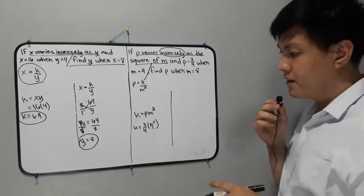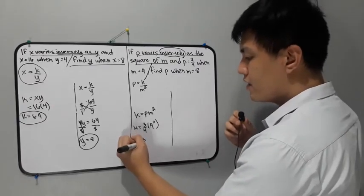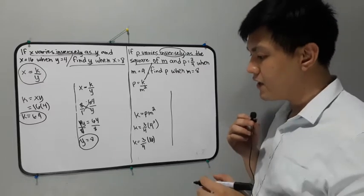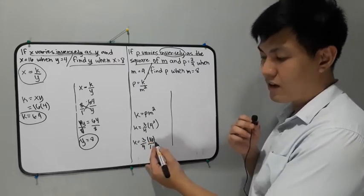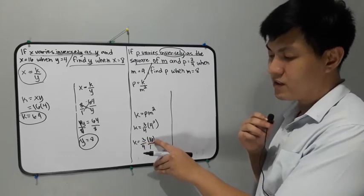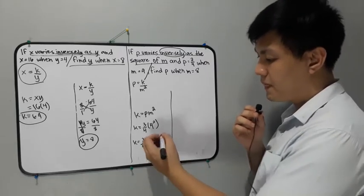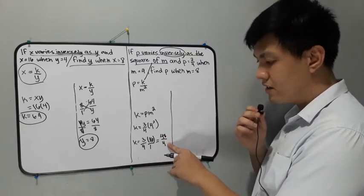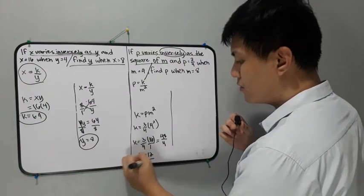Simplify: 4 squared is equal to 16. So k is equal to 3/4 times 16. We write 16 as 16/1 to make them both fractions. In multiplying fractions, we multiply numerator by numerator and denominator by denominator. 3 times 16 is 48, and 4 times 1 is 4. Then 48 divided by 4 is equal to 12. Therefore the value of k here is equal to 12.